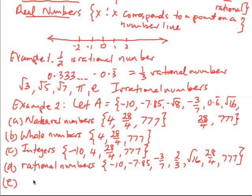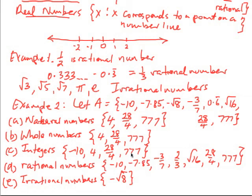For the irrational numbers, these are everything that's not rational — anything in set A that's not in the rational set. That would in fact be just the negative square root of 8. Notice that all of the numbers in this set are real numbers. The breakdown is: natural numbers, whole numbers, integers, and rational numbers nest within each other as subsets — all integers are rational, whole numbers are integers, and all natural numbers are whole numbers.